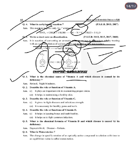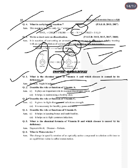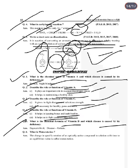Next chapter: Biomolecules. Write the chemical name of vitamin A and the deficiency disease caused by it. Chemical name: retinol. Deficiency disease: night blindness. Role of vitamin A: plays an important role in maintaining proper vision and helps in maintaining healthy skin. Role of vitamin C: helps the body fight disease and infection, and is necessary for healthy gums and teeth. Role of vitamin D: helps in keeping bones and teeth healthy, and helps to fight common infections.